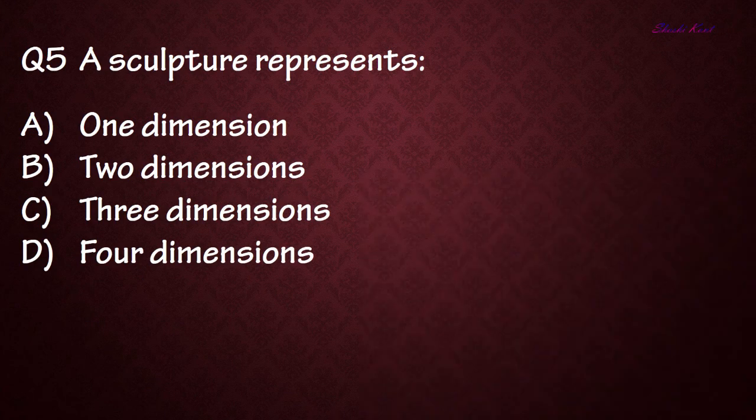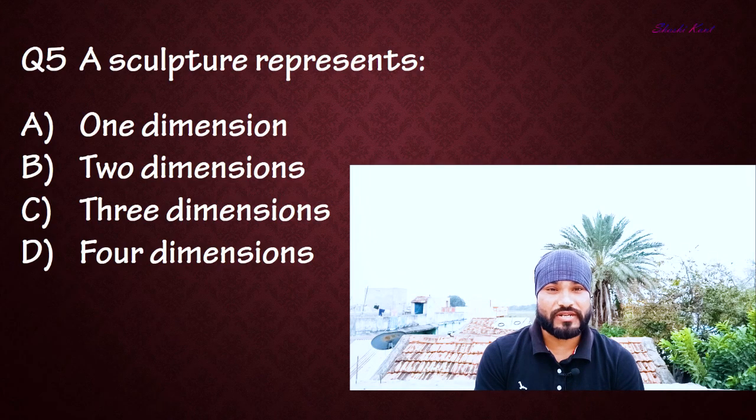Question number five: Sculpture represents — Option A: One dimension, Option B: Two dimensions, Option C: Three dimensions, Option D: Four dimensions. The correct answer is Option C: Three dimensions.